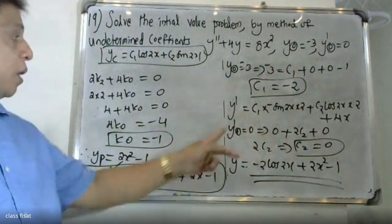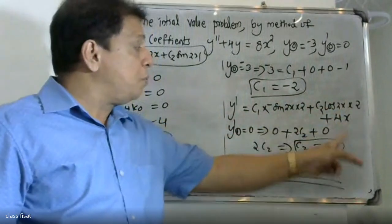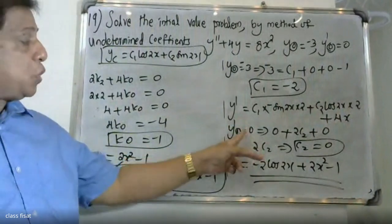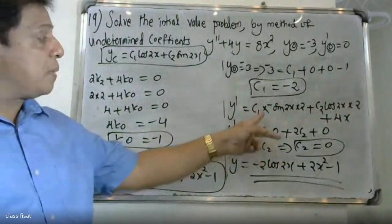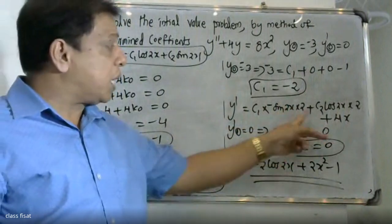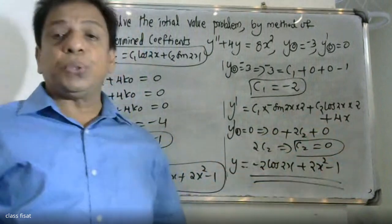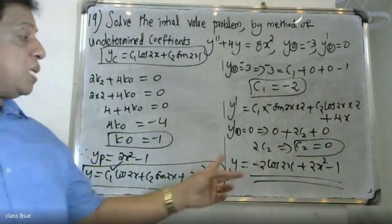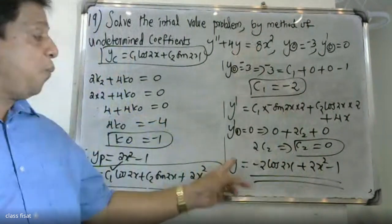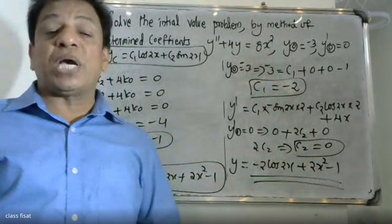y' = c1·(-sin2x)·2 + c2·(cos2x)·2 + 4x. At x = 0: y'(0) = 0 + 2c2 + 0 = 0, so 2c2 = 0, therefore c2 = 0. With c1 = -2 and c2 = 0, the final answer is y = -2·cos2x + 2x² - 1.